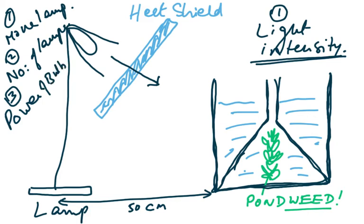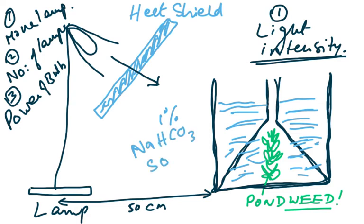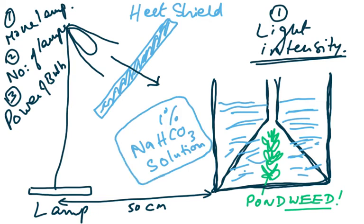Different methods of changing light intensity have come up in Paper 5 questions. We also need to put a liquid in the apparatus — we use a chemical called sodium hydrogen carbonate solution, for example 1%. You keep this constant because you're only changing light intensity in this experiment.